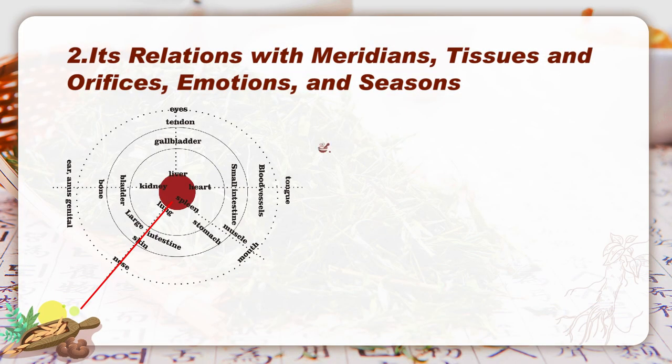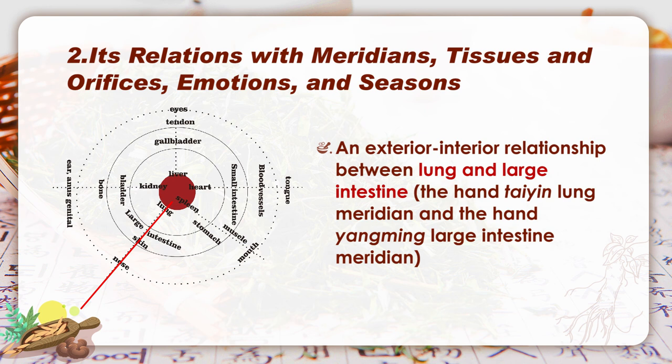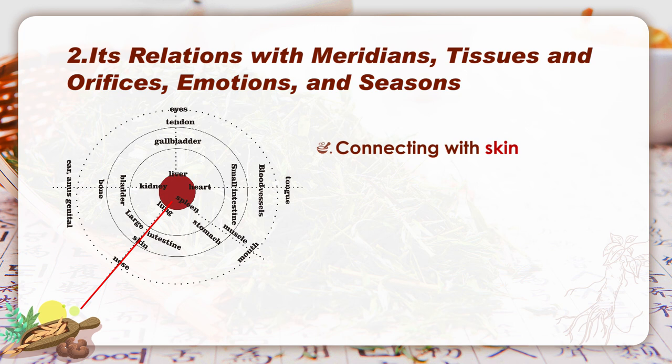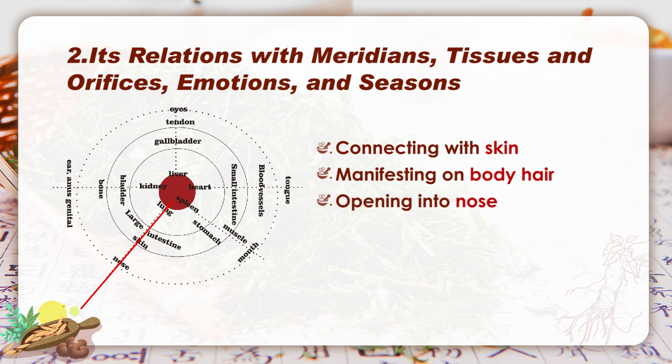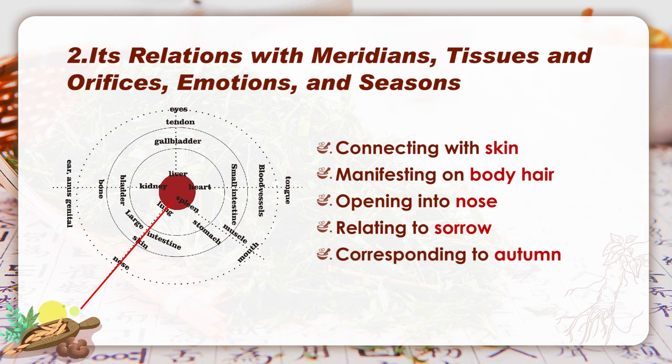Finally, we will have a quick look at lung's relations. Lung and large intestine build up an exterior-interior relationship based on two meridians: the hand taiyin lung meridian and the hand yangming large intestine meridian. Furthermore, lung is connected to skin and manifests on body hair, opens into the nose, relates to sorrow, and corresponds to autumn. All of the above is significant when TCM makes diagnosis and conducts treatment accordingly. These are the contents for lung. Thanks for your attention and I'll see you next time.